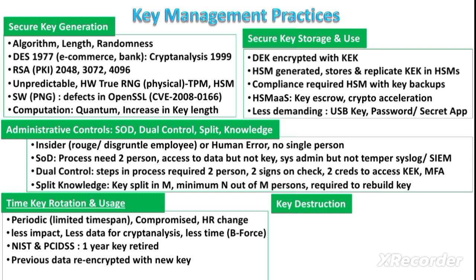During key rotation, all previous data is decrypted using the retired key and then re-encrypted using the new key. Once it is confirmed that no data remains encrypted by the old key, that old key is retired. You can either archive the retired key — and this archival should be encrypted with the new key — or you can destroy the retired key in a secure fashion.